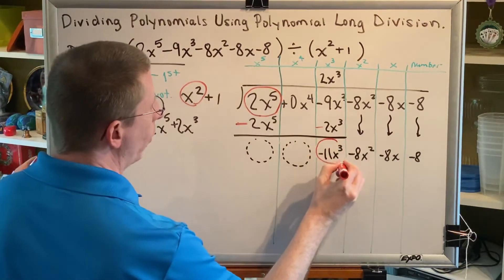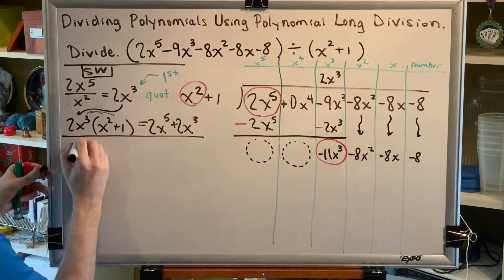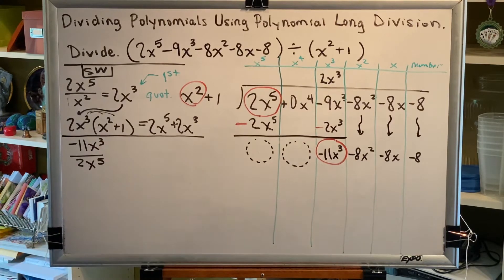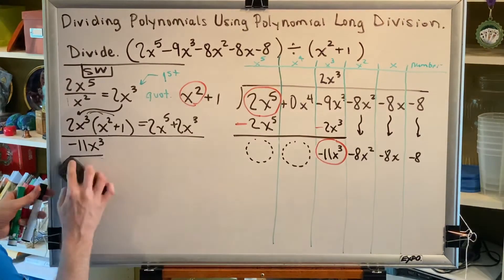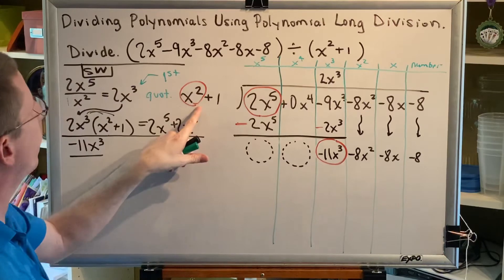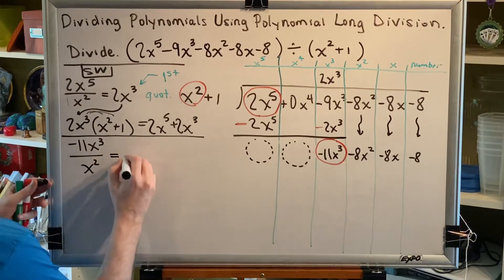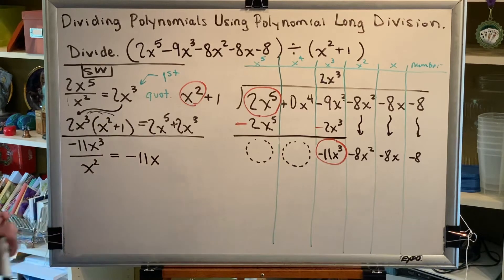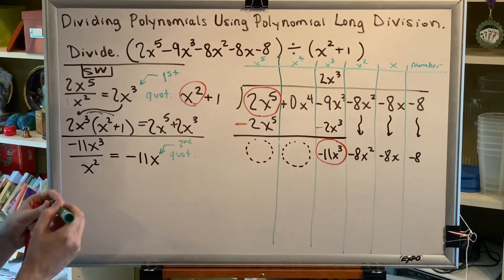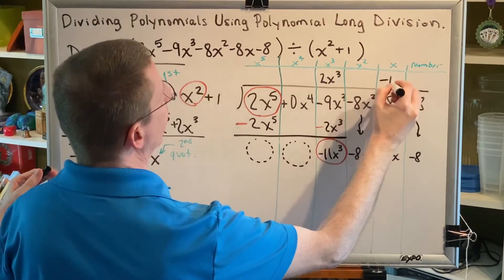The first term of the lowest under divided by the first term of the denominator: negative 11x cubed divided by x squared gives the result negative 11x. This is the second piece of the quotient. It goes above the division bar in the x column because the variable part is x, so minus 11x.